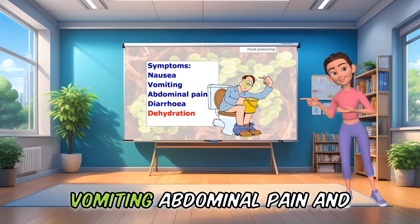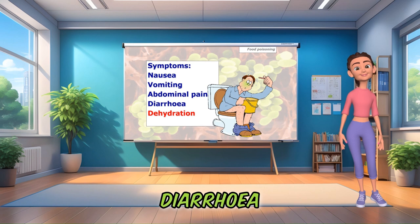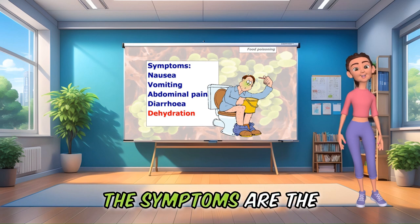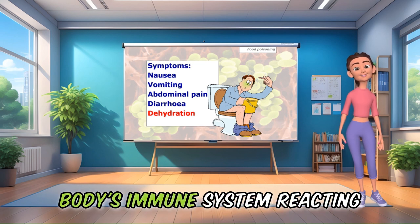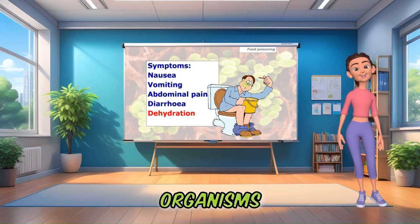The symptoms of food poisoning include nausea, vomiting, abdominal pain, and diarrhoea. The symptoms are the body's immune system reacting to the food poisoning organisms.